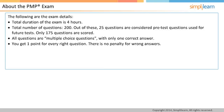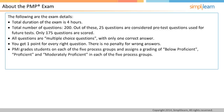You should attempt all 200 questions in the given time. PMI grades students on each of the five process groups and based on the grading, they declare PMP pass or fail. The grades are not disclosed to everyone — rather a rating is given. They are below proficient, proficient, and moderately proficient in each of the five process groups.